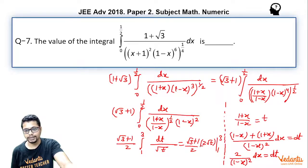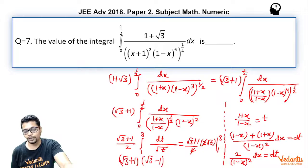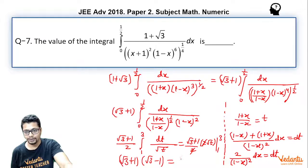This essentially becomes, upon cancellation of 2, (√3 + 1) times (√3 − 1) upon putting the limits, since the integral of 1/√t is 2√t evaluated from 1 to 3. So this becomes √3² − 1², which is 2. So 2 is the answer.